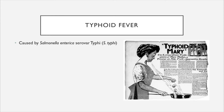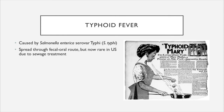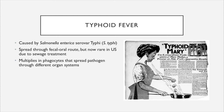Typhoid fever is also caused by Salmonella enterica, specifically the serovar Typhi, often abbreviated as Salmonella Typhi. It is spread through the fecal-oral route but is now rare in the U.S. due to sewage treatment. This species can multiply inside leukocytes that perform phagocytosis — instead of being destroyed, the pathogens multiply inside the leukocytes and hitch a ride through the blood and lymphatic system to spread to different organ systems.